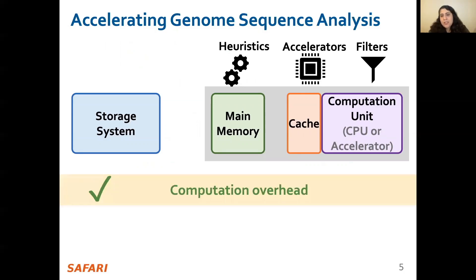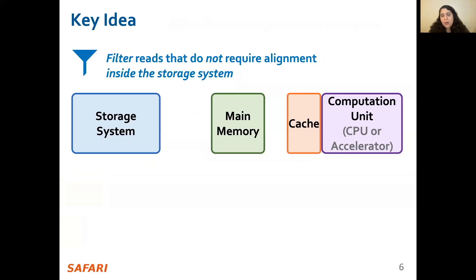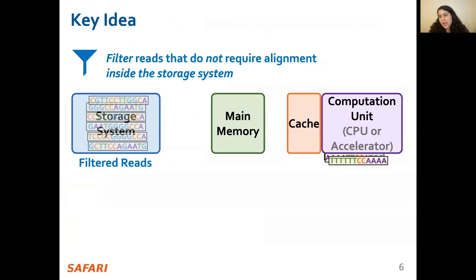While these approaches address the computation overhead in readmapping, none of them alleviate the data movement overhead from storage, whose impact becomes even larger when computation overhead gets alleviated. Our key idea is to filter out reads that do not require the expensive alignment step in the storage system to fundamentally reduce the data movement overhead of readmapping.